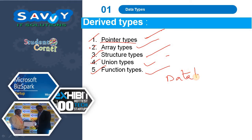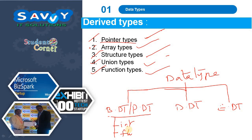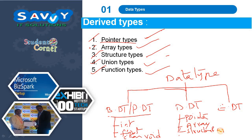A datatype indicates what type of data we are taking and how much memory it will be assigned. It is classified into three types: built-in or primitive datatypes, derived datatypes, and enum datatypes. Primitive datatypes include integer family, float family, character family, and void. Derived datatypes include pointers, arrays, structure, union, and function types. Enum datatypes include enum and typedef.